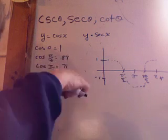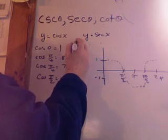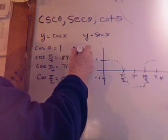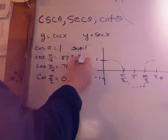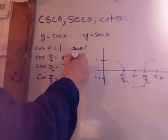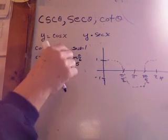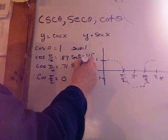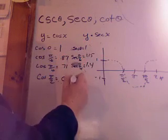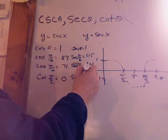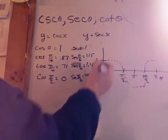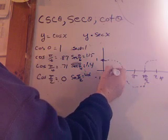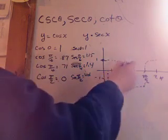So doing the reciprocals of these functions, again, the reciprocal of 1 is for the secant of 0, still 1. The secant of π over 6 is the reciprocal of that, which is about 1.15. The reciprocal of π over 4, 0.71 is about 1.4, and secant π over 2, the reciprocal of 0 is undefined. So if I just plot those few points here, 0 was still 1, and then we had π over 6, π over 4, and then this one here, that was undefined.